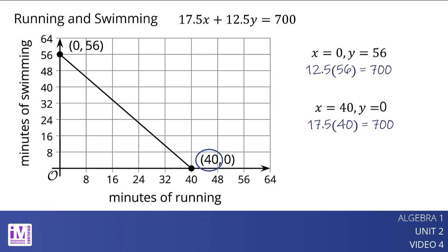What about the slope of this graph? We can compute it from the graph, but it is not shown in the equation 17.5x plus 12.5y equals 700.